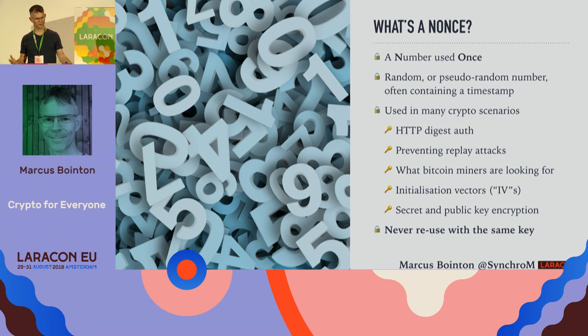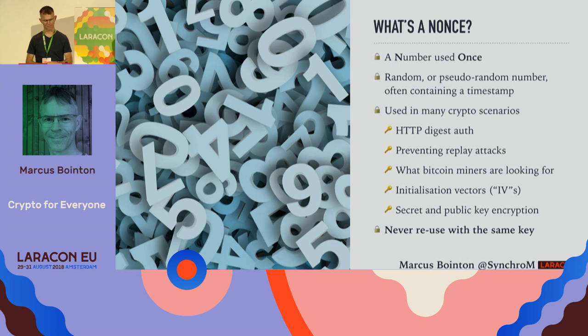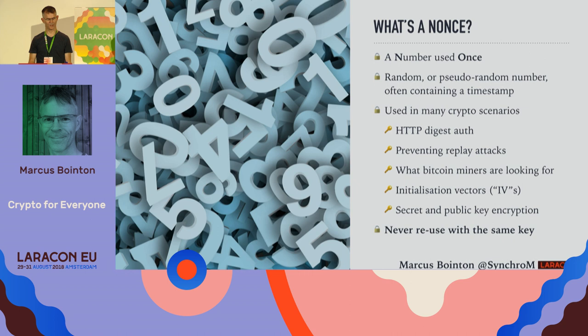What size random number should we use for a nonce? Sodium provides size constants which you should use in place of your own numbers — as PHP versions go on, those numbers might be increased automatically. Currently, the key bytes value is 32 and the nonce bytes value is 24 — those are bytes, not bits. To actually generate a nonce, all you need is PHP's random_bytes function, which is a cryptographically secure source of random data.